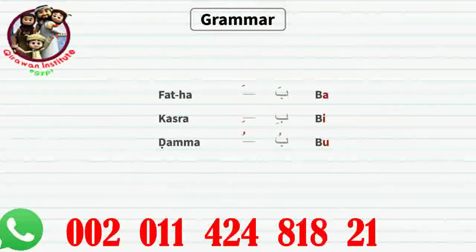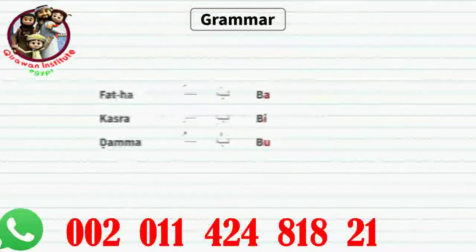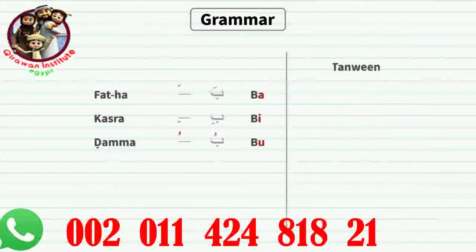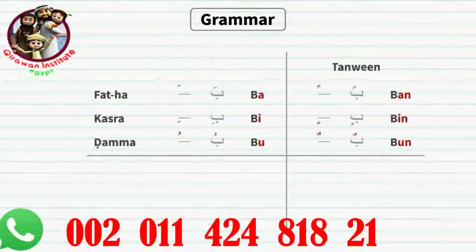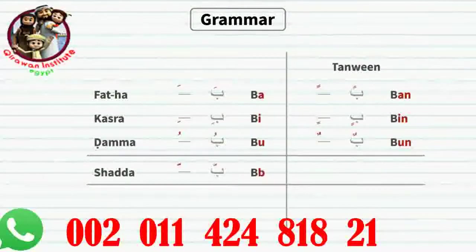Zammah: it adds a 'u' sound to the letter. For example, 'b' becomes 'bu'. The Fathah, Kasrah, and Zammah, when they are doubled, are called tanween. For example: 'ban', 'bin', 'bun'. Shadda doubles the letter — for example, 'b' becomes doubled.